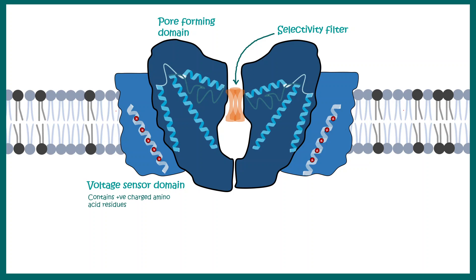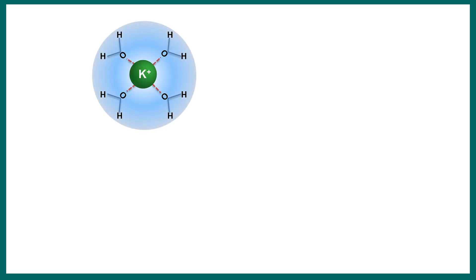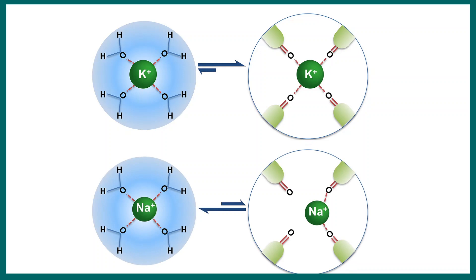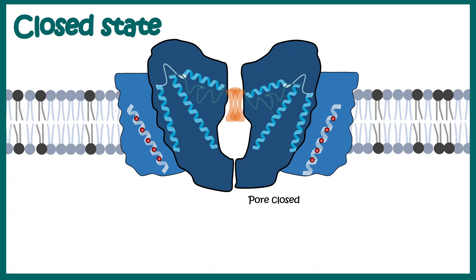Let's understand how the selectivity filter works. When potassium is present in the environment it is solvated by interacting with several water molecules. While it passes through the pores of the KV channel, it should have a similar kind of interaction, and that is provided by the carbonyl oxygens of voltage-sensitive residues. Sodium is a smaller cation and cannot have these optimal interactions, which is why sodium cannot pass through but potassium can.